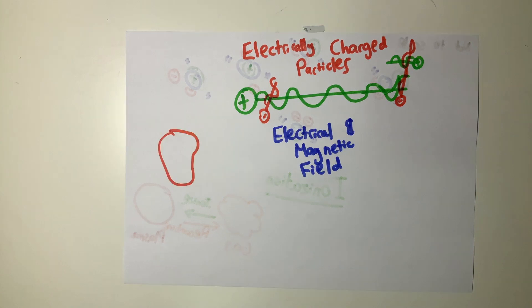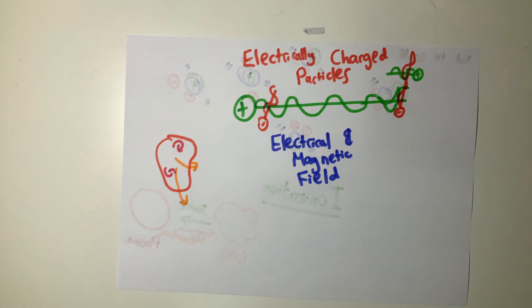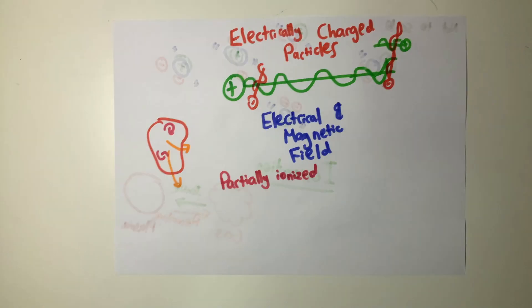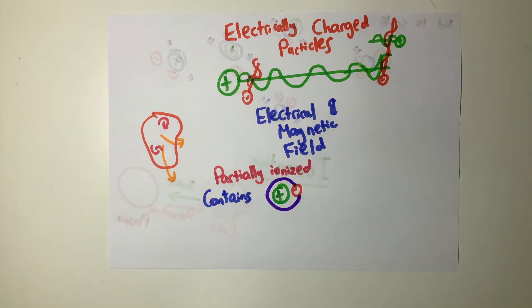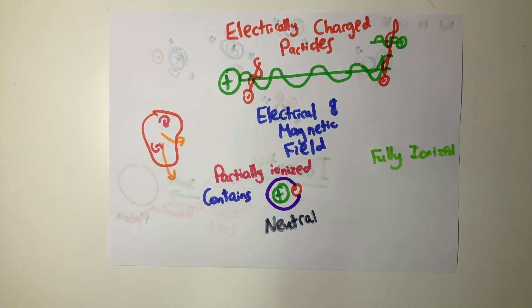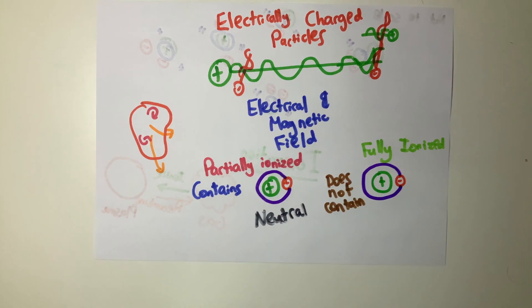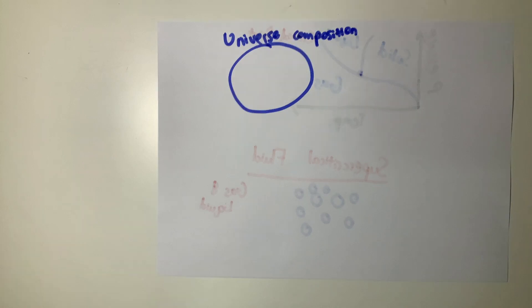Plasma that contains particles of neutral electric charge is known as partially ionized, while plasma that contains no electrically neutral particles is known as fully ionized. Most of the universe is plasma. Stars and galaxies are all plasma. An example of plasma that you can easily find on Earth is lightning, a partially ionized plasma.